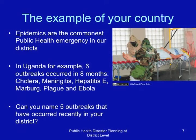Epidemics are the commonest public health emergency in districts across the East African region. In Uganda, for example, six outbreaks occurred in eight months in 2007, and these included cholera, meningitis, hepatitis E, Mabak, plague, and Ebola. Can you name five outbreaks that have occurred recently in your district?